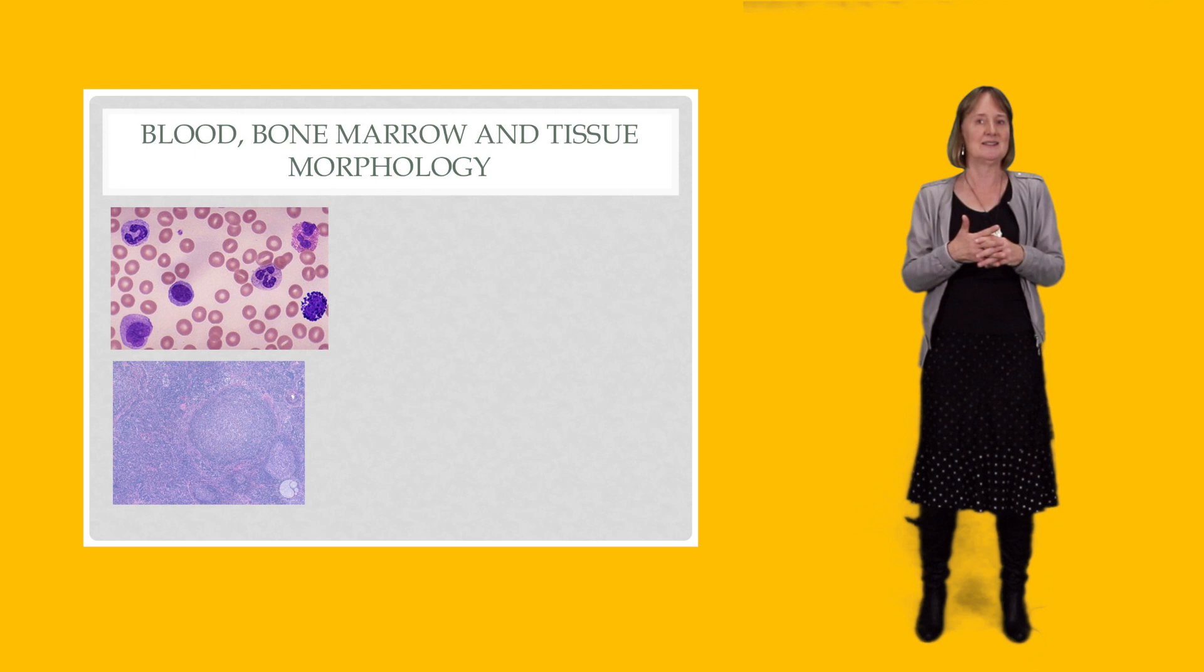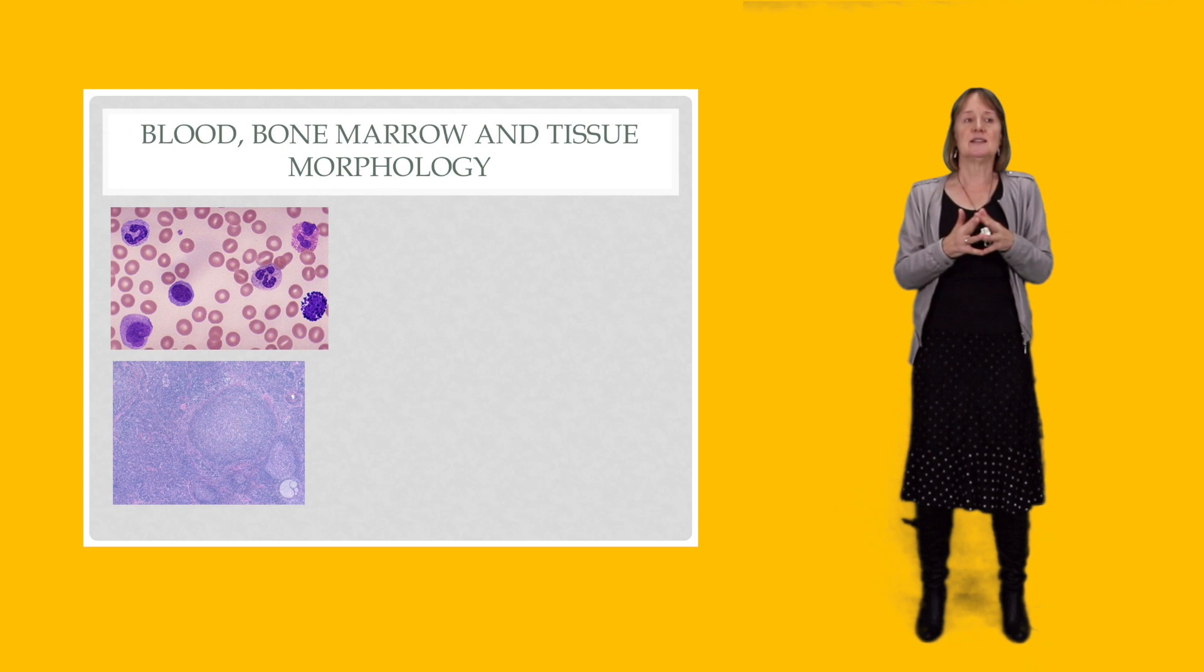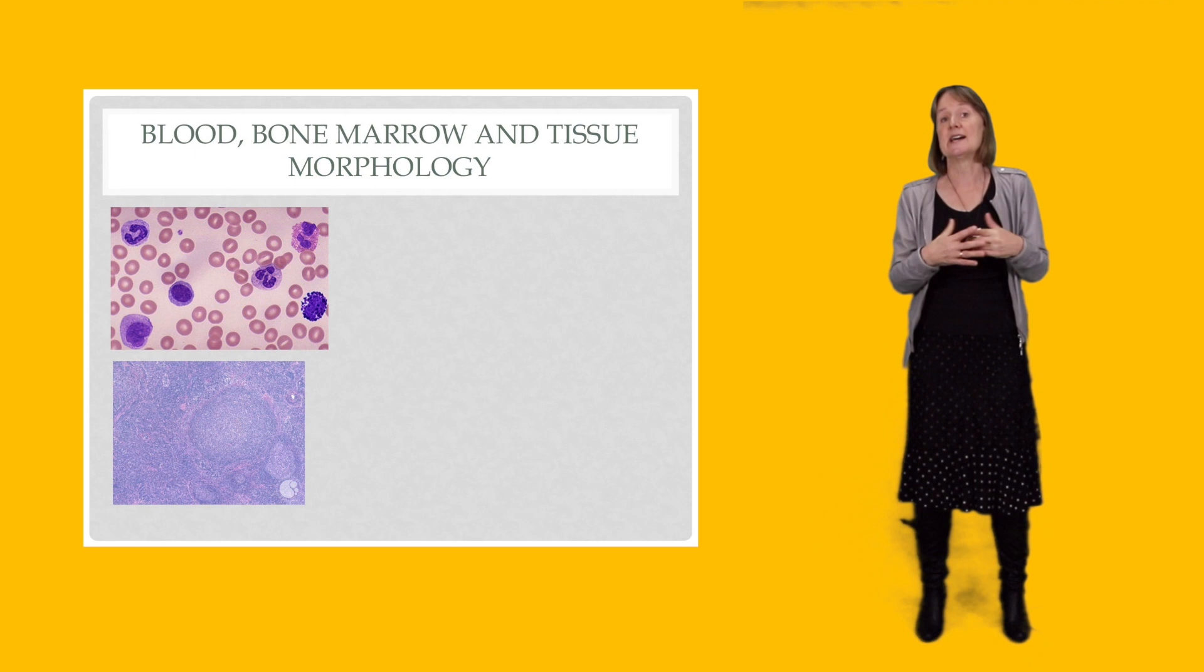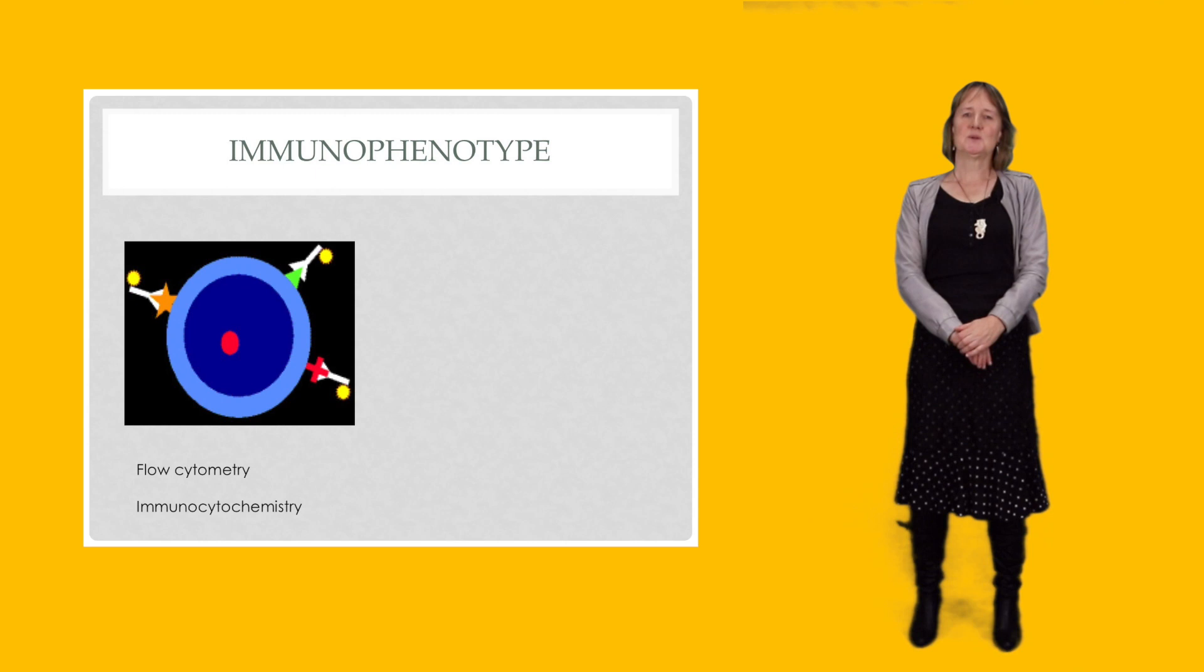So the pictures here, just for illustration, the top one is a normal peripheral blood film. So there are normal red cells and normal white cells. And the picture at the bottom is a lymph node which is actually a reactive lymph node, not a malignant one.